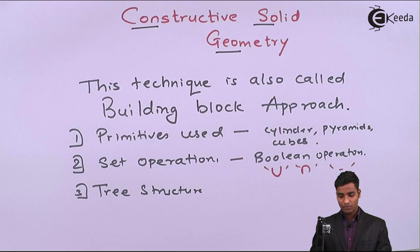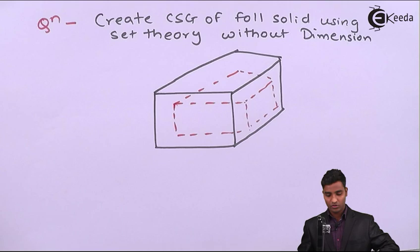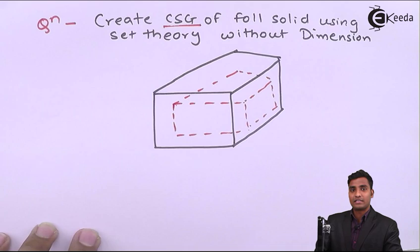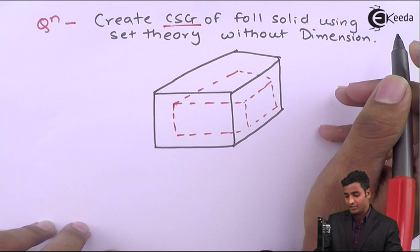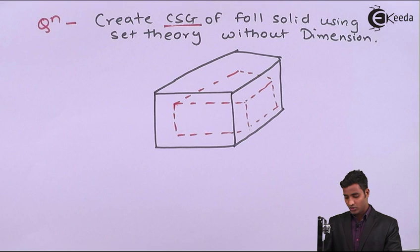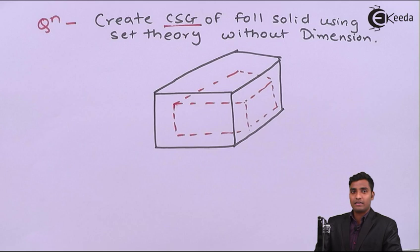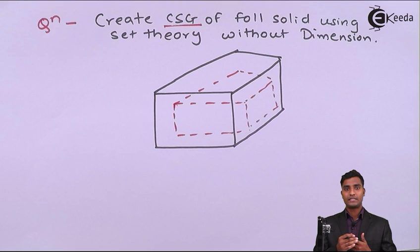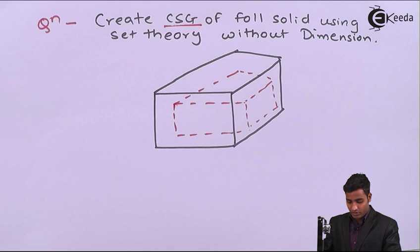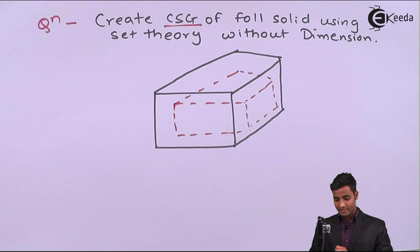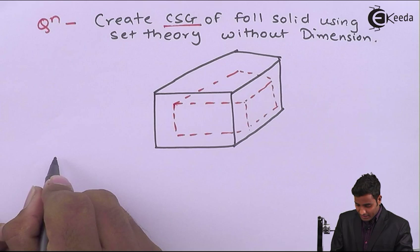Let us take one problem. The question is: create a CSG model for the following solid using set theory without dimensions. To develop a CSG model we require three steps — primitives used, set operation, and tree structure. From the figure itself, we can see that two cubes are there, so first we write the primitives.